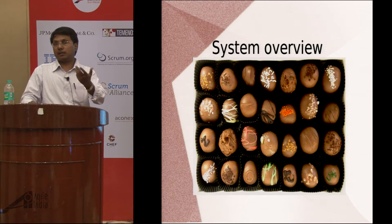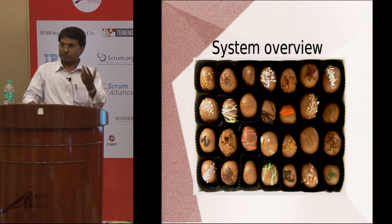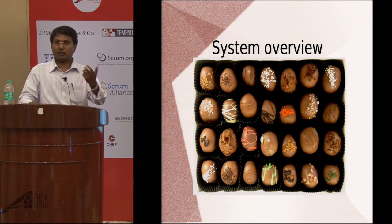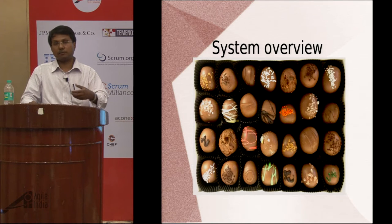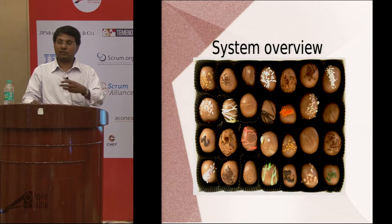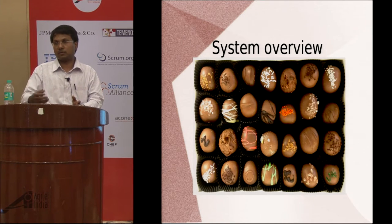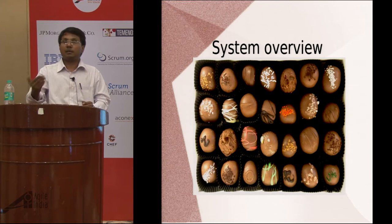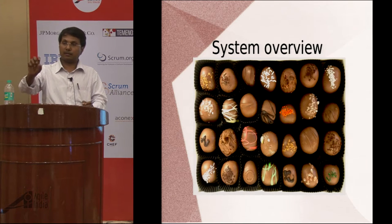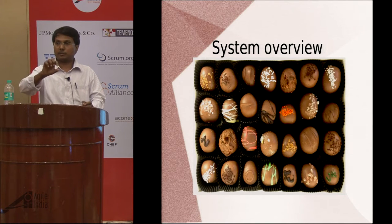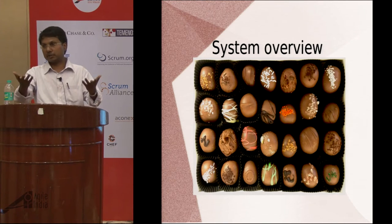Goals were set in terms of both software output and individual development. For example, someone might say they want to learn F# and implement software in F#, or pursue DevOps activities. Goals also included taking on more complex features or increased scope. The banding had to be set such that the goals and expectations were matching, and the review was based on that alignment.